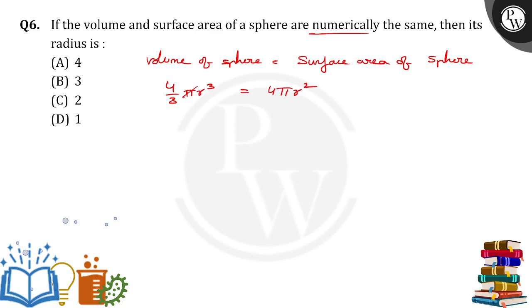So first of all, pi and pi cancel. Then r square cancels r power 3, leaving r. 4 by 3 r is equal to 4. 4 and 4 cancel. Therefore the radius is equal to 3 centimeters.